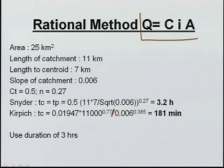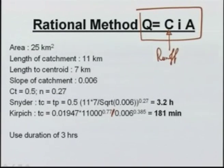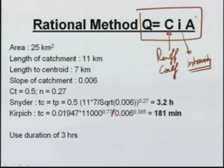We can also do flood frequency analysis if we have a gauged catchment and measure the annual flood for a period of 30 or 40 years. Based on that, we can extrapolate and estimate what the flood value will be for a 100-year or 200-year period. We will look at some examples of these methods, starting with the rational method which expresses the flood as Q = C·i·A, where i is the intensity of rainfall and A is the catchment area.